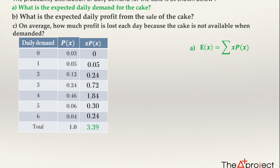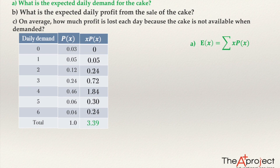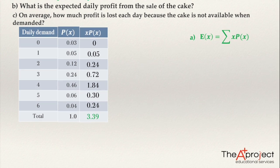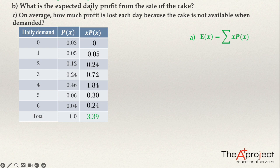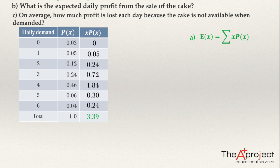More interesting is the second question: what is the expected daily profit from the sale of the cake? We already have the probability distribution for demand, but we don't have the probability distribution for the profit. To compute the expected value, we need a probability distribution for the profit. A probability distribution is a list of all possible values of the variable and their probabilities, so I need to know all possible values of the profit.